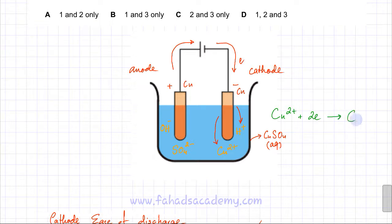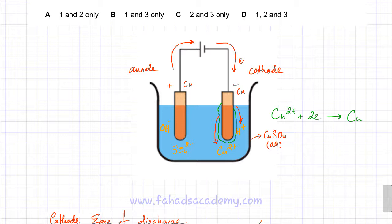As a result, copper metal starts to get deposited at the cathode. This is what happens at the cathode.